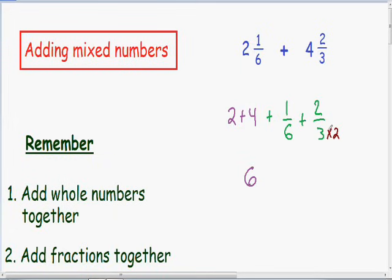But one thing you have to remember is that whatever you do to the bottom of a fraction, you have to do to the top of a fraction. So since we multiplied the bottom number by 2, we have to multiply the top number by 2 as well.